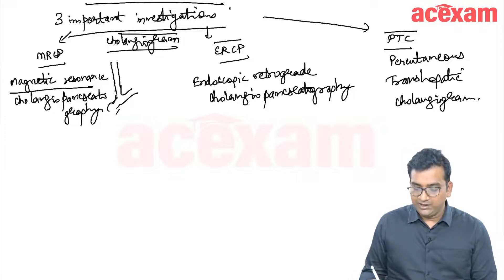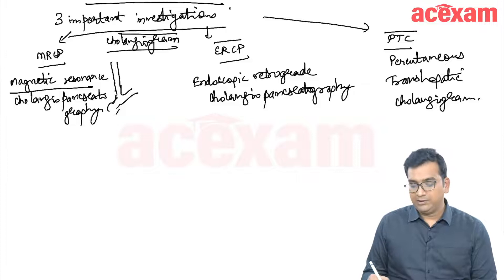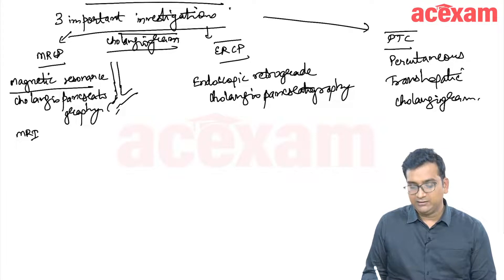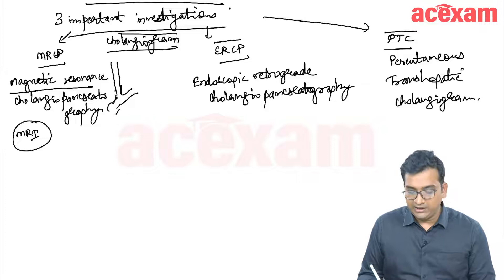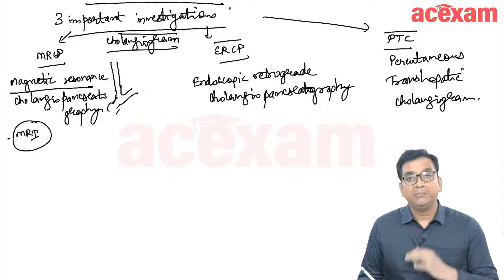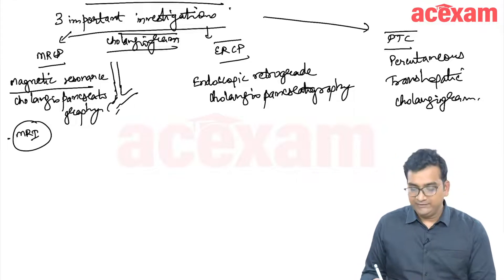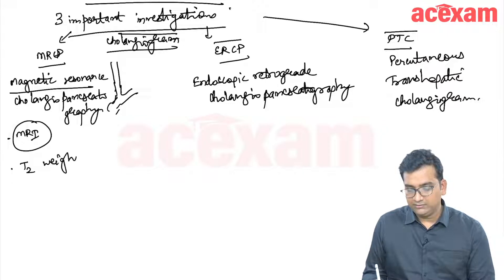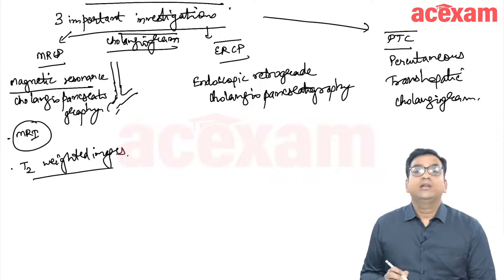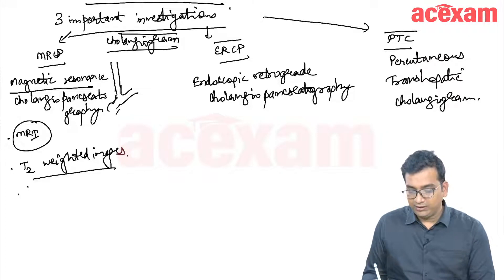In MRCP, the patient is getting an MRI done. Within the MRI, we are preparing MRCP images. These images are T2 weighted images, and we are not using any contrast — no contrast is used.